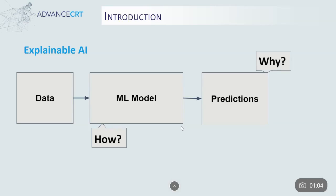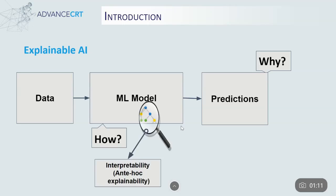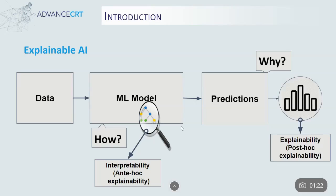To understand the how, the model needs to be transparent or interpretable. Interpretability is the degree to which the rationale of a system's operation can be observed within that system. To understand the why, the predictions need to be explained to the end user, and that is known as explainability, which is the degree to which outputs of automated systems can be explained in human terms. Explainable AI is a domain in which techniques are designed to make AI-based systems interpretable and explainable, and is also known as XAI.